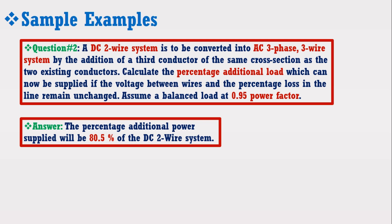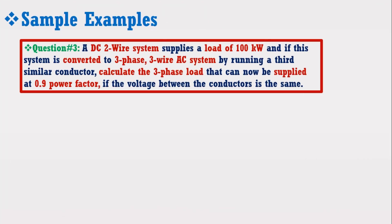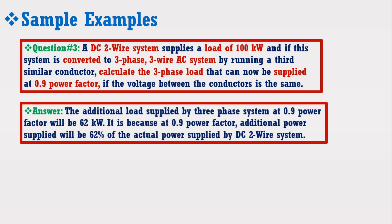Just imagine how much time is saved by applying the above smart tips. Let's further apply these smart tips to solve another example. The question says: when a DC 2-wire system is supplying a load of 100 kW and is to be replaced with a 3-phase AC system, how much additional load at 0.9 power factor will be supplied? Without solving it, we can directly tell the answer that additional load supplied by the 3-phase system at 0.9 power factor will be 62 kW, because the additional power supplied by the 3-phase will be 62% of the actual power supplied by the DC 2-wire system.